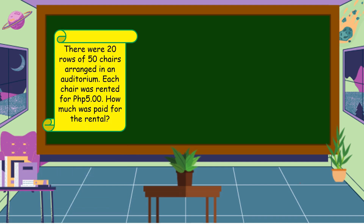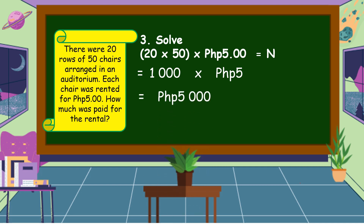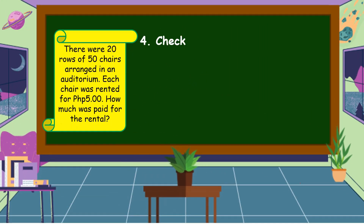Now let's carry out the plan and solve the problem. The number sentence is 20 times 50 — we multiply first. 20 times 50 is equal to 1,000, then 1,000 times 5 pesos is equal to 5,000 pesos. Therefore, the rental was 5,000 pesos.